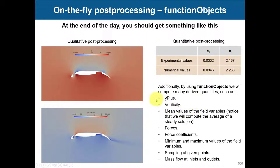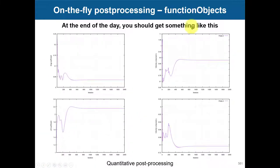We're going to set up different function objects or monitors to compute quantities like wall plots, vorticity, mean values, forces, force coefficients, minimum and maximum values, and sampling at points and lines. We can then use that information to plot things like lift and drag coefficients, velocity components, or control receivers.